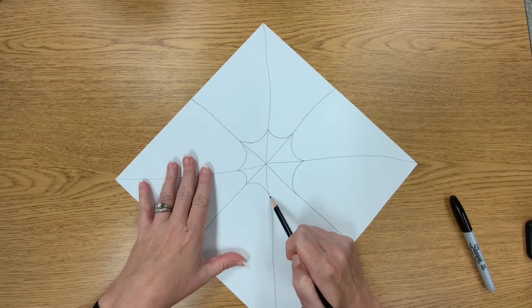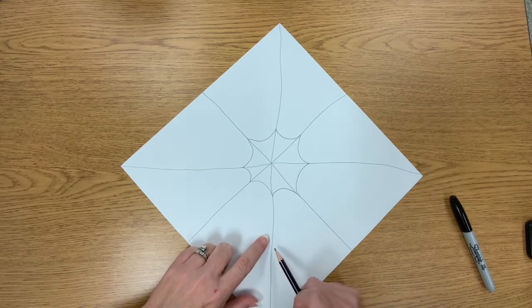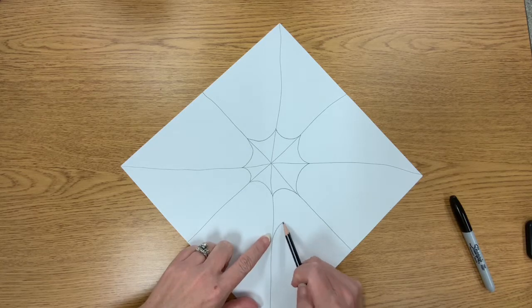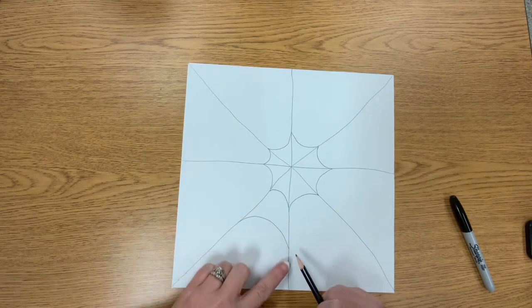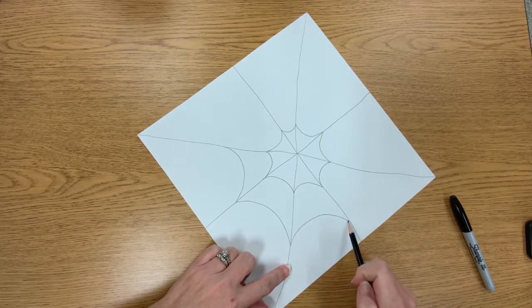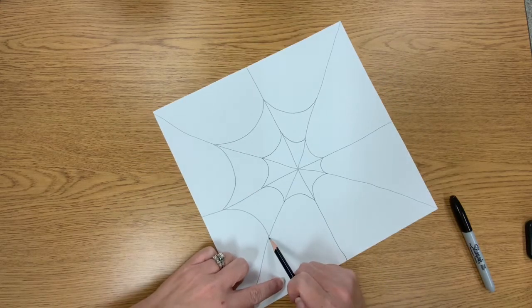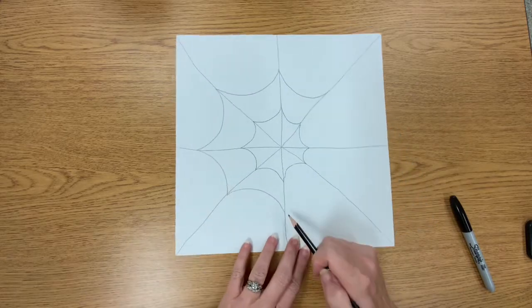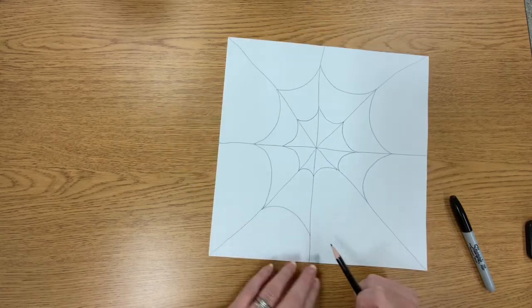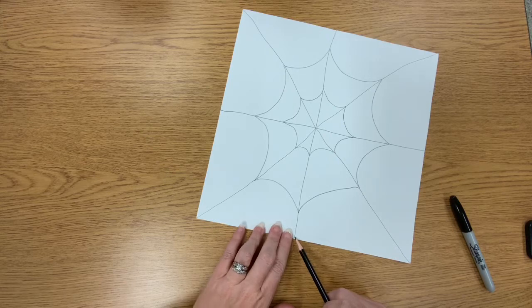you turn the paper as you go. So there's one line, come down about that far and we'll do another one. This is going to create our spider web, and then the last one.